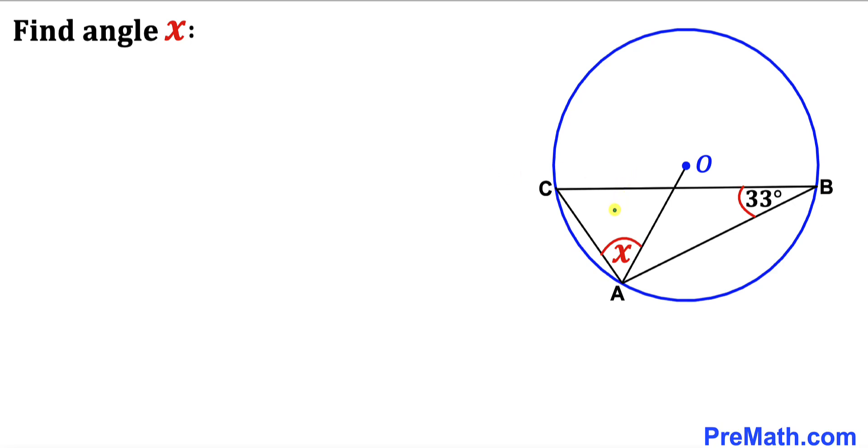Welcome to PreMath. In this video, we have triangle ABC inscribed in a circle with center O. As you can see in this diagram, angle ABC is 33 degrees, and we're going to find angle x. Please don't forget to give a thumbs up and subscribe. Let's get started.